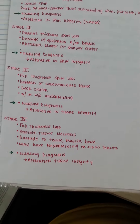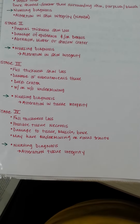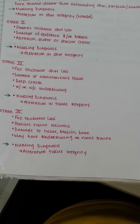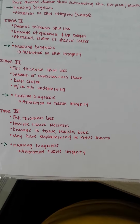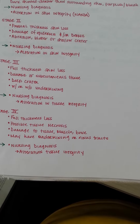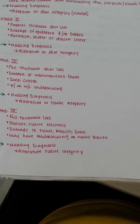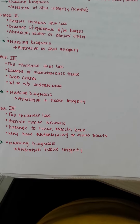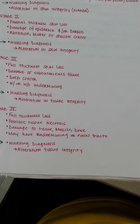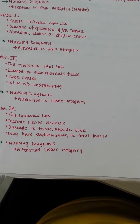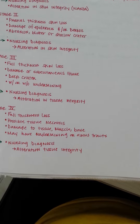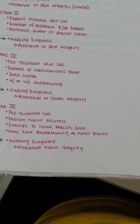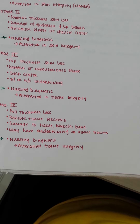Stage 4 is full thickness tissue loss with destruction, tissue necrosis, or damage to muscle, bone, or supporting structures. There may be sinus tracts, deep pockets of infection, tunneling, undermining, eschar, or slough.